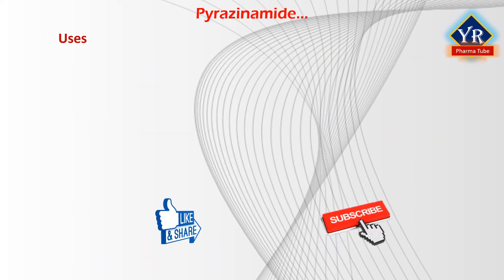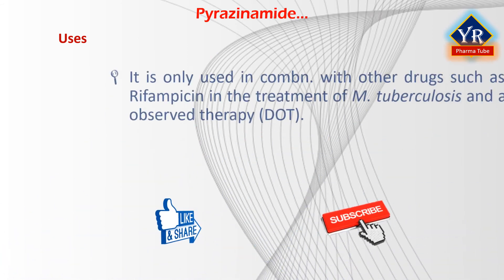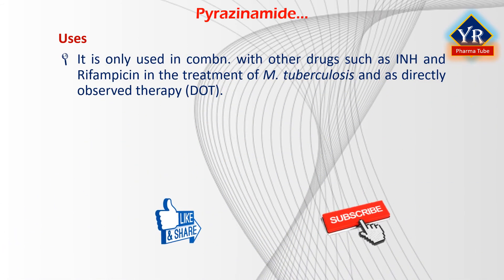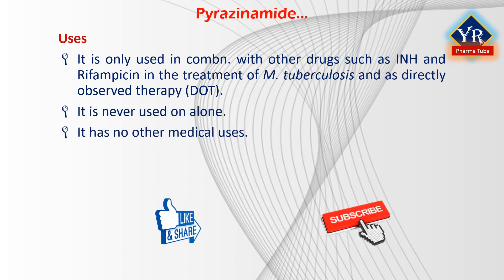Uses of pyrazinamide: Pyrazinamide is only used in combination with other drugs such as isoniazid and rifampicin in the treatment of mycobacterium tuberculosis and as directly observed therapy. It is never used on its own and has no other indicated medical uses.